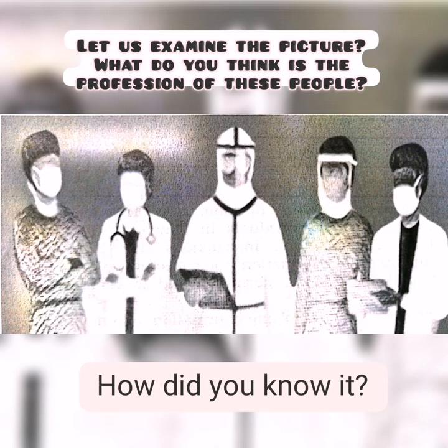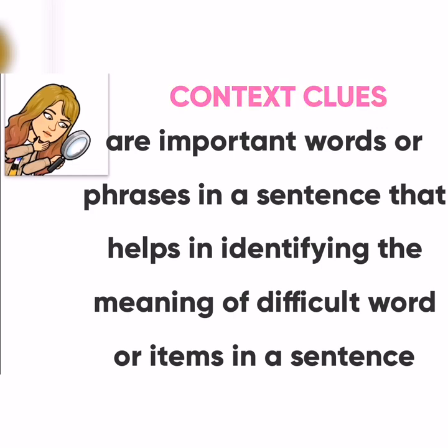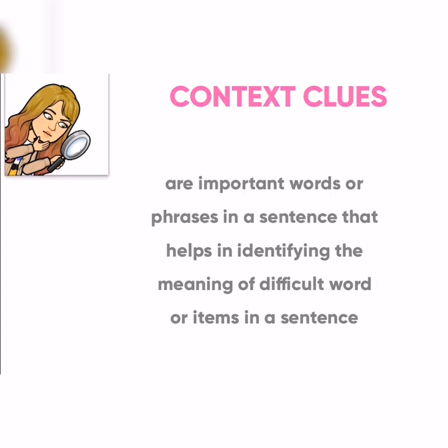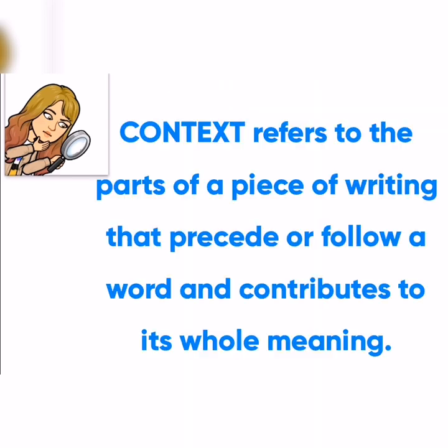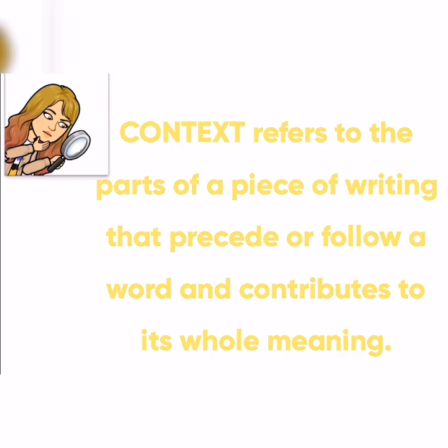Let us examine the picture. What do you think is the profession of these people, and how did you know it? If you answered that they are medical frontliners, then you're right, because there is a clue in what they were wearing. We can compare it to context clues. Context clues are important words or phrases in a sentence that help identify the meaning of difficult words. They provide further information about a word or phrase that helps the reader understand its meaning. Context refers to the part of a piece of writing that precedes or follows a word and contributes to its whole meaning.